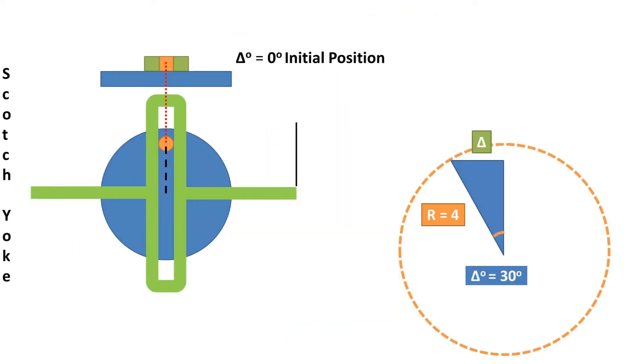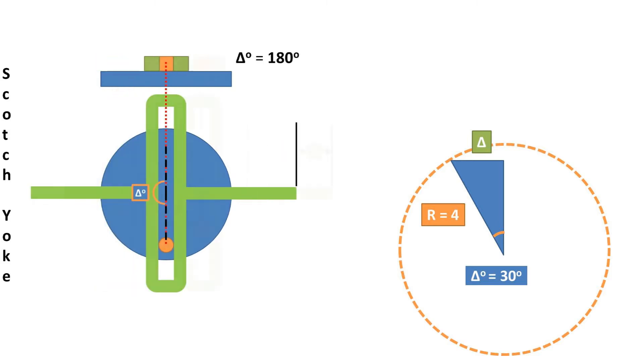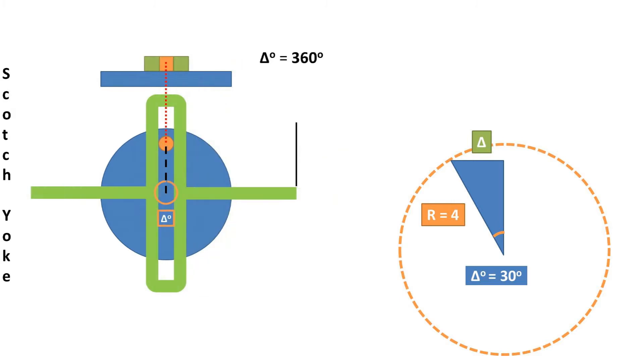So we can think in terms of the unit circle and think in terms of a right triangle with a hypotenuse of the radius of the path, which we will make 4, and an angle of rotation as the angle of the triangle, which we'll use 30 degrees.